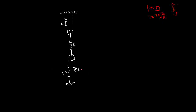Now, suppose we pull this mass in this direction by distance x and hold it there. All the strings will be stretched. Let's say the tension developed in this string is T, so here also it will be T. Now, the pulley is massless and ideal, so here the tension will be 2T, and if here the tension is 2T then here also it will be 2T, and where it is 2T here it will be T, and here it will be T. This is the arrangement of the tensions.